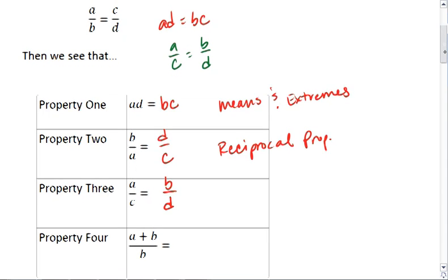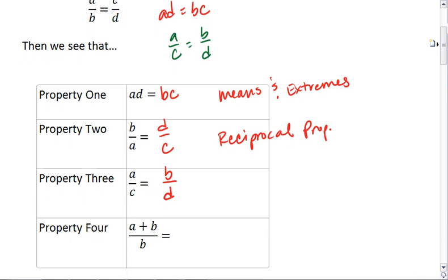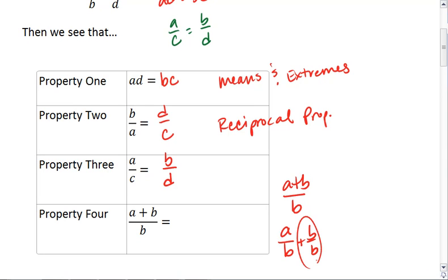Property four is probably one of the trickiest for students to wrap their heads around. But let's take a moment and look at this. We're saying that a plus b over b. Well we can break this apart into two ratios, where it's a over b plus b over b. Well notice b over b is the same thing as just adding one to this side.